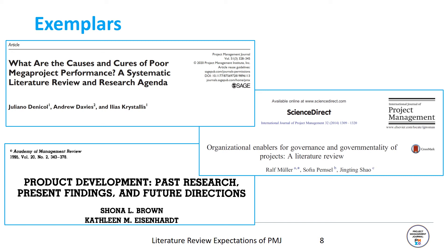In a classic work, Brown and Eisenhardt study innovation research to identify three unique historical streams of study, build a model of each, and suggest possible paths for future research based upon relationships and concepts not well defined or even missing. Each of these articles makes a significant contribution to the discipline, but none of them follow a pure strategy with regards to following either a systematic, narrative, or integrative review. Instead, they combine elements from each to come up with the most effective approach possible.